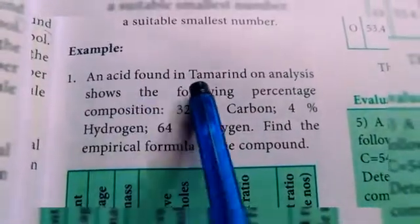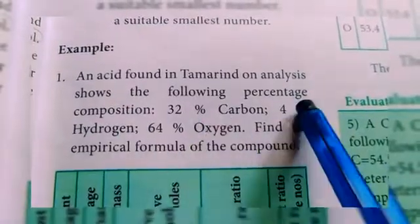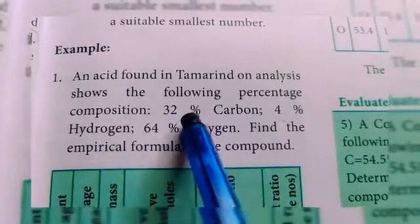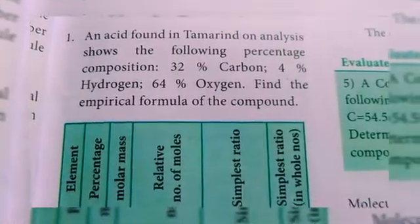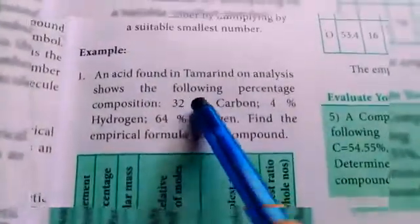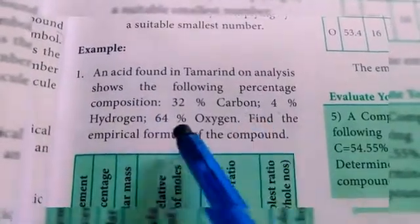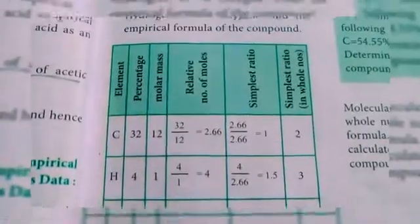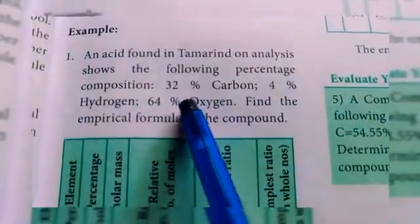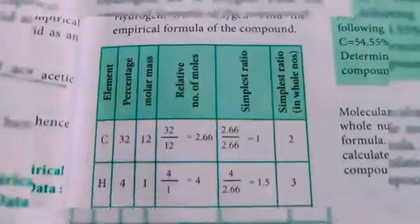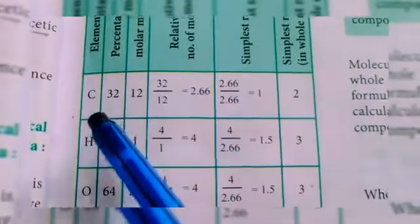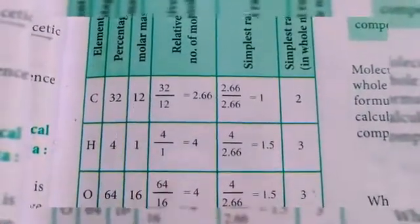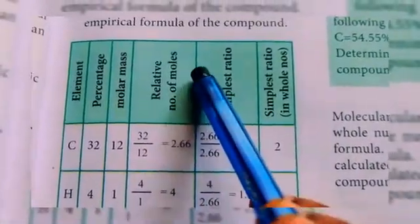Now let us see a problem. An acid found in tamarind — analysis shows the following percentage composition: 32% carbon, 4% hydrogen, and 64% oxygen. Find the empirical formula of this compound. First, we write the elements — carbon, hydrogen, and oxygen. The percentages are 32, 4, and 64. Then we divide by atomic mass: carbon's molar mass is 12, hydrogen is 1, and oxygen is 16.